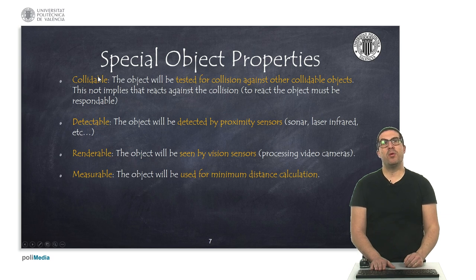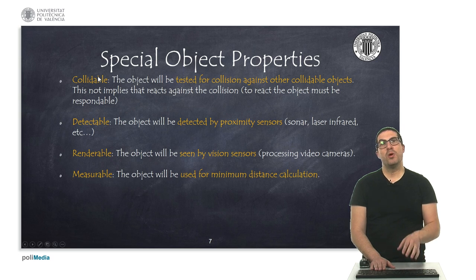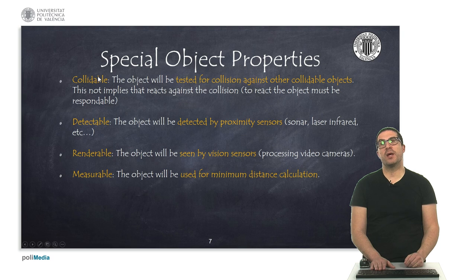And finally, the measurable property will be used for the minimum distance calculation module, which is useful or convenient in certain cases, specifically to avoid collisions too.